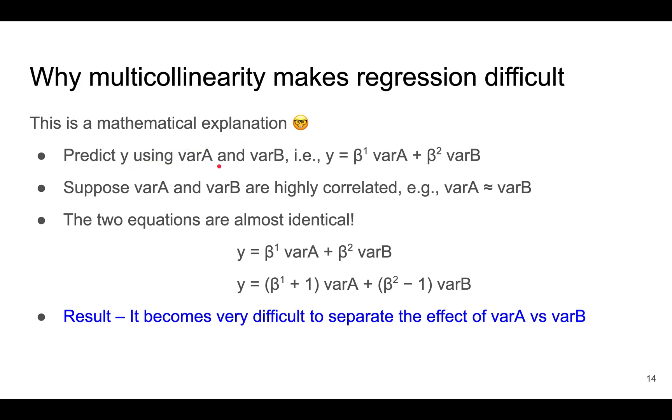The goal is to predict y using variable A and variable B. In other words, find a coefficient β¹ and β² for this equation to be true with minimal error. What if variables A and B are highly correlated, almost exactly the same?